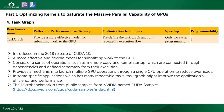The task graph feature was introduced in CUDA. A code example from CUDA samples illustrates its use. This feature allows a more effective and flexible model for submitting work to the GPU. The task graph can consist of a series of operations such as memory copy and kernel startup. It provides a mechanism to launch multiple GPU operations through a single CPU operation to reduce overhead. In specific applications with many repeatable tasks, task graphs can improve efficiency and performance.